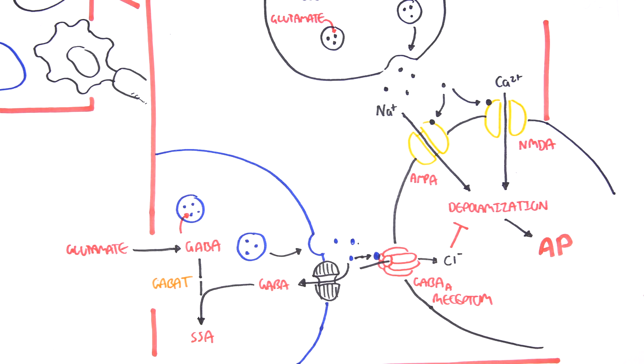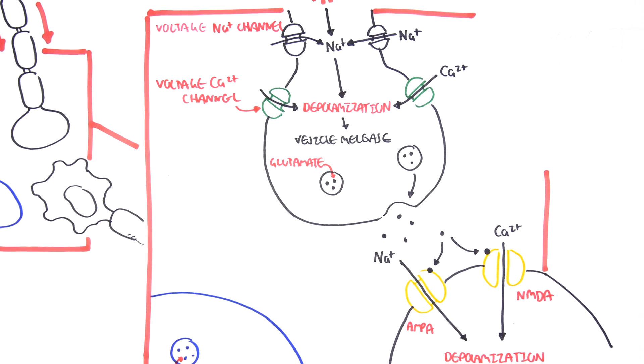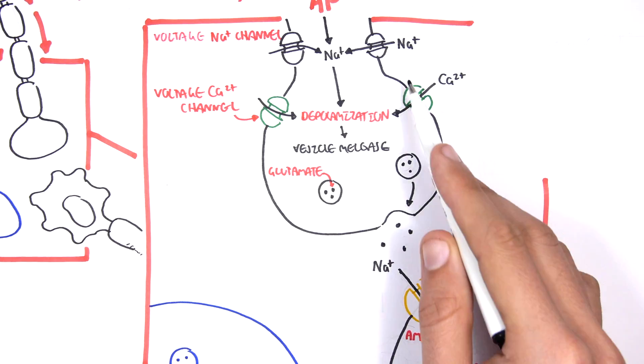As you can see, we have glutamate neurotransmitters which are exciting the cells, and GABAnergic neurons which release GABA. GABA inhibits and suppresses neuronal activity. This is regulated normally, but in epilepsy, you have more excitement.